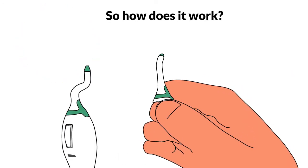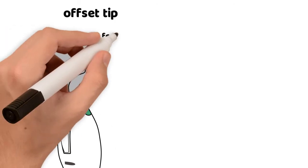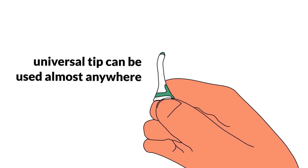So how does it work? First, choose the tip that will work best for the area to clean. The Offset tip has been designed for all-on implant type restorations, while the Universal tip can be used almost anywhere.